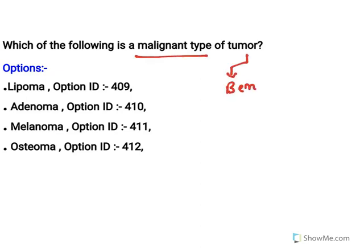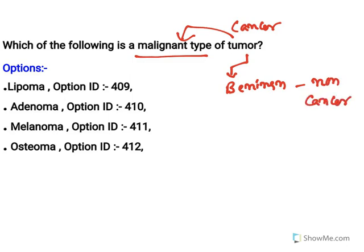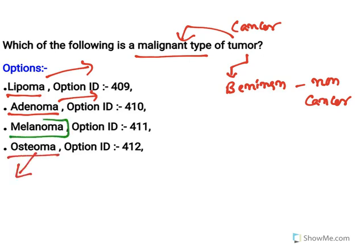Which of the following is a malignant type of tumor? Tumors are of two types: benign and malignant — malignant is cancerous, benign is non-cancerous. Lipoma is benign (adipose accumulation), adenoma is benign, osteoma is benign bone growth. Melanoma is a type of skin cancer, so it is a malignant tumor — that option is correct.